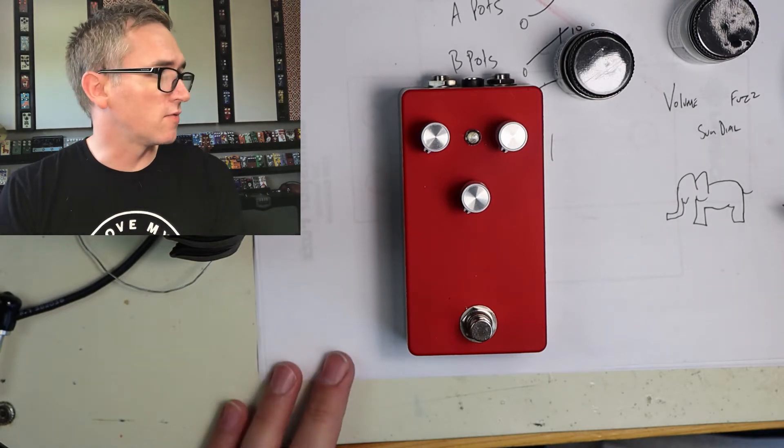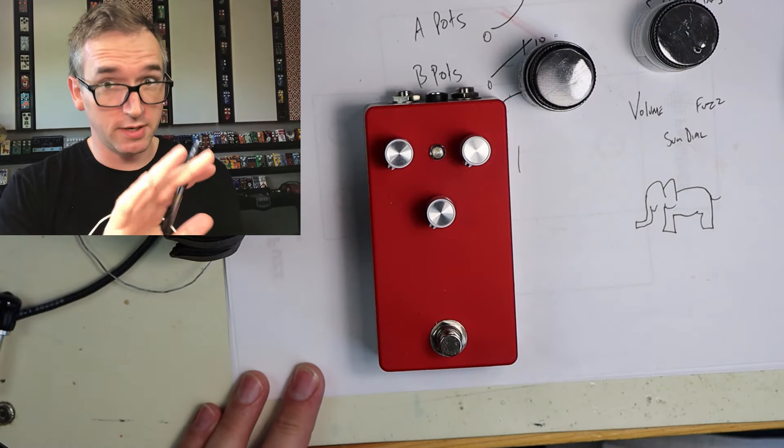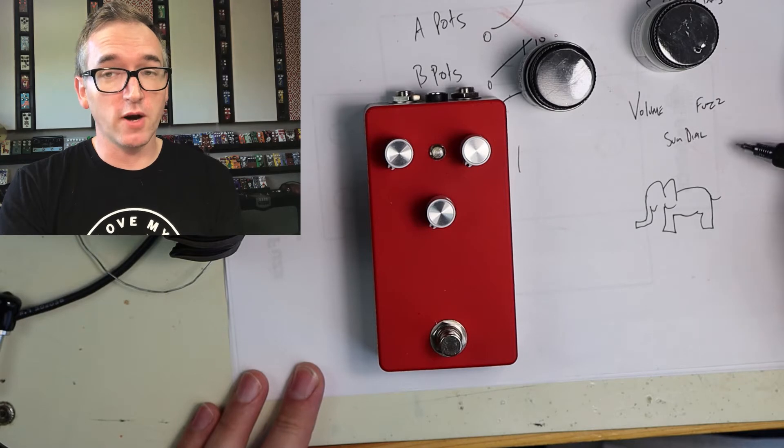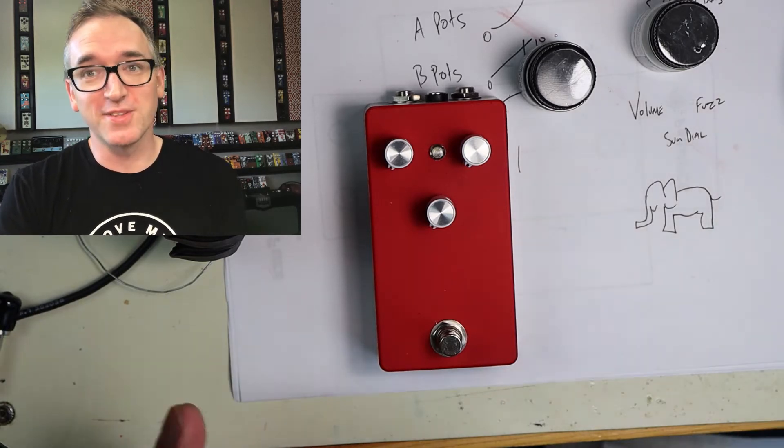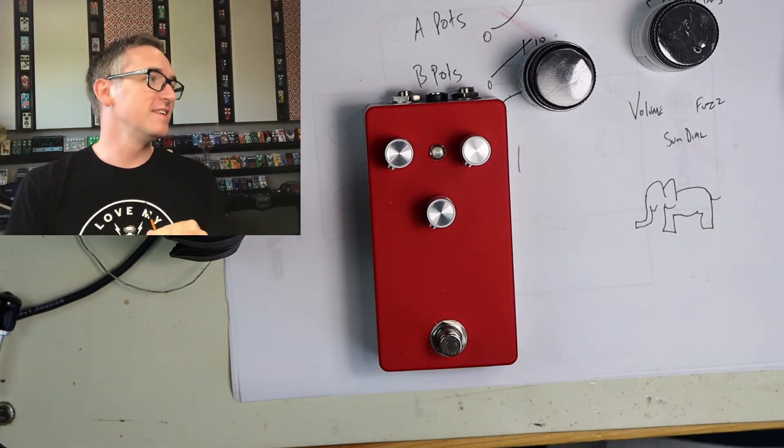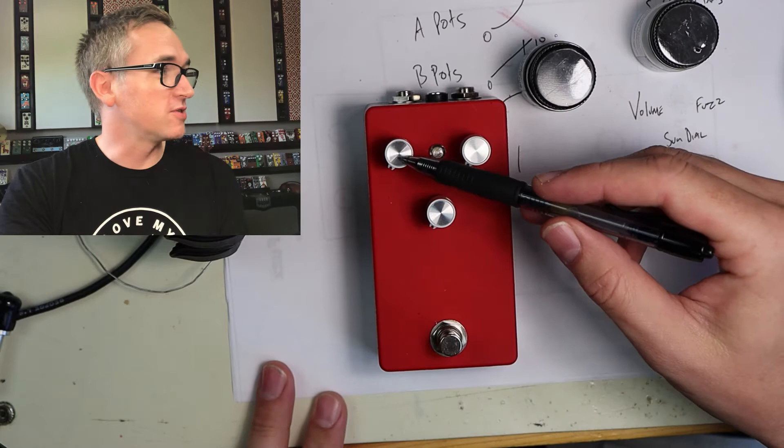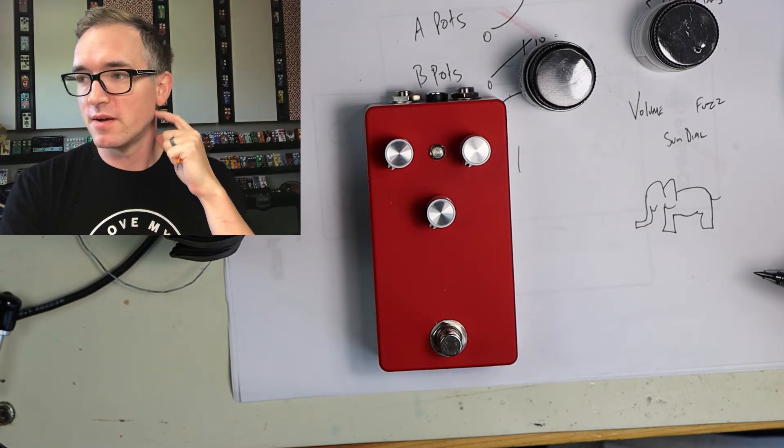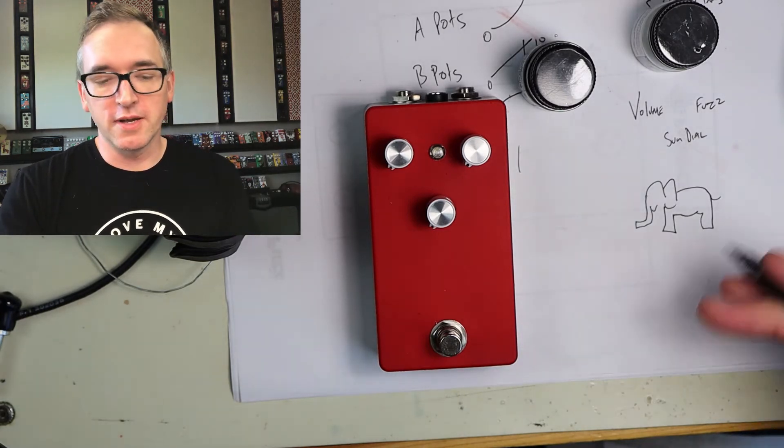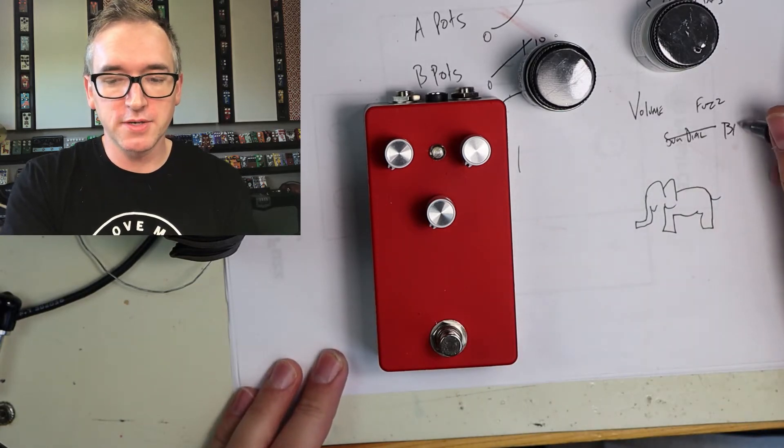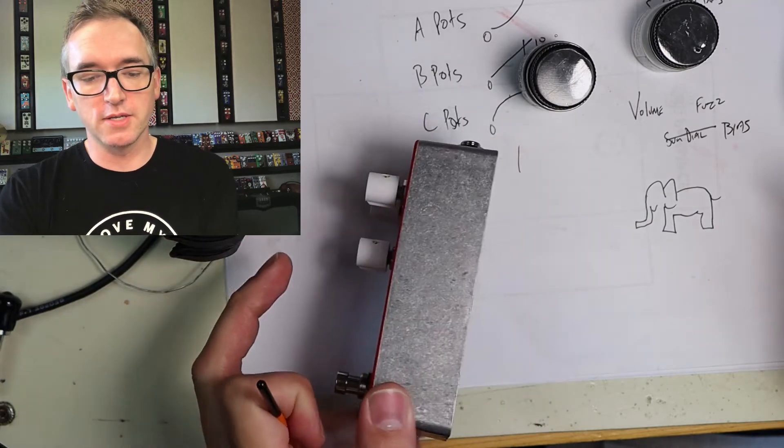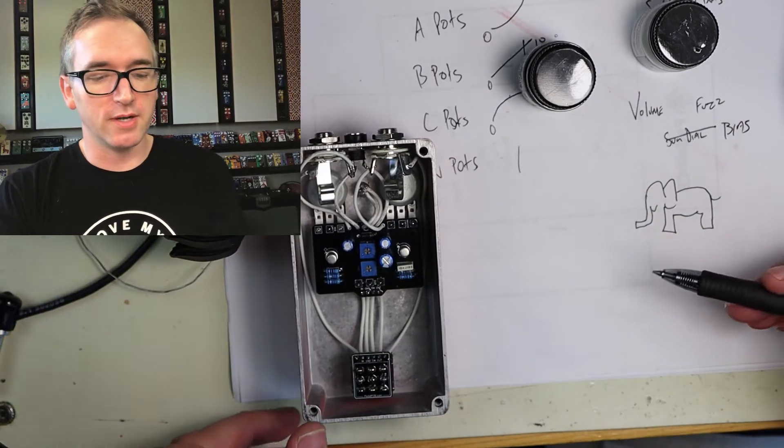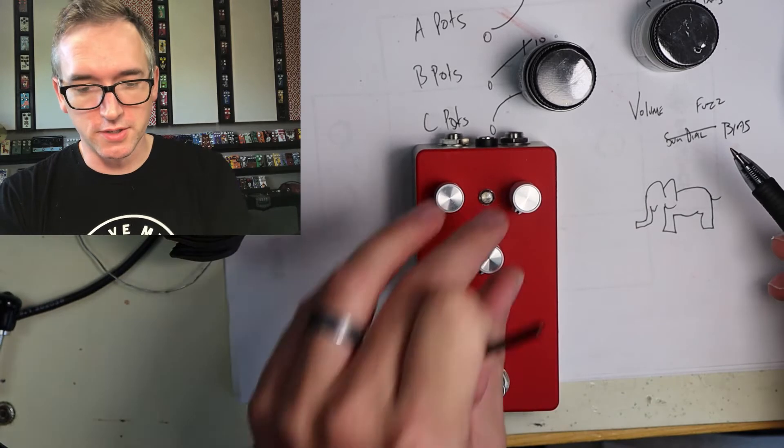Now, when I do any sort of lettering, I will write out what it is that I'm supposed to paint and where, because I've painted the wrong things and had to paint over and whatever. So as you can tell, I have volume which will be here, fuzz which will be here, and then this is sundial in the original. I don't want this to be an exact copy, I'm not going to paint the sun on here, so I'm actually just going to call this bias, because that's what that is. It's essentially just working in conjunction with this bias pot right here, to dial on the second stage transistors.